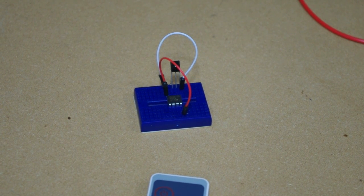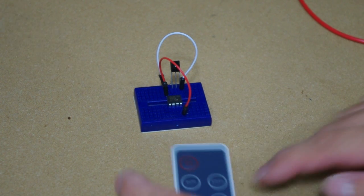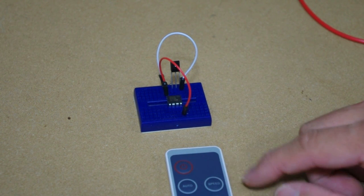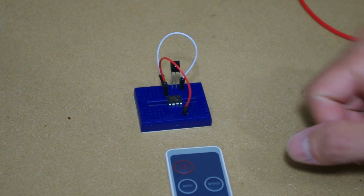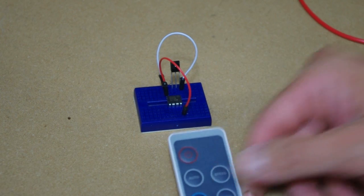What we're going to do is set the 555 timer up as a one-shot, as a monostable timer, and we're going to make it so when we press the button on the remote control, the 555 pin number three, which is the output, will go high for one second.